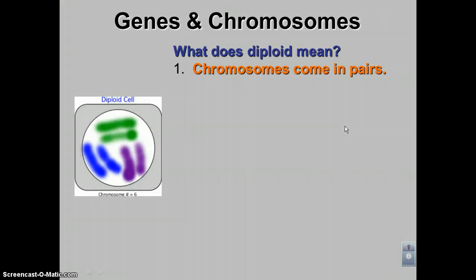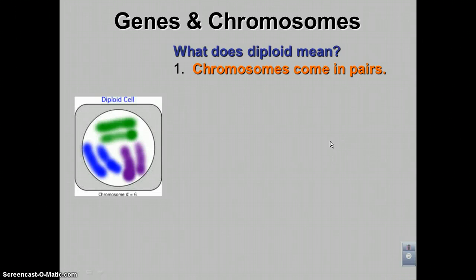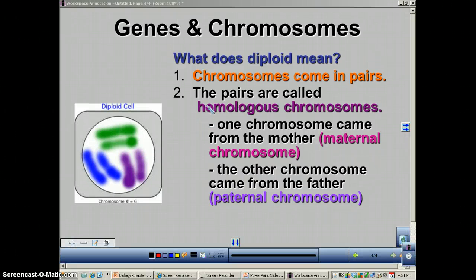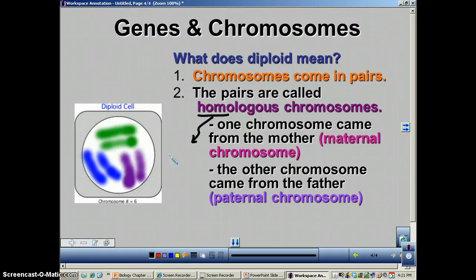When you have two of each chromosome, another way of saying that is chromosomes come in pairs. Why do they come in pairs in these kinds of organisms? It's because they have homologous chromosomes. If you look at the word homologous, you can see the prefix 'homo,' which means the same.